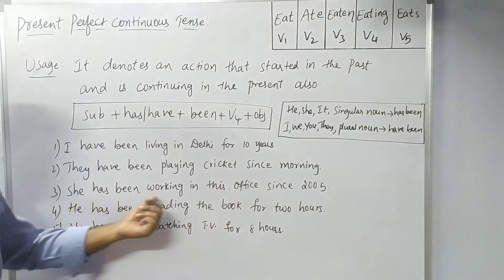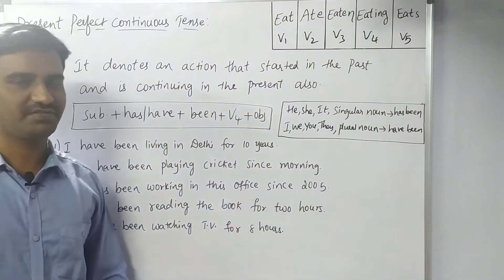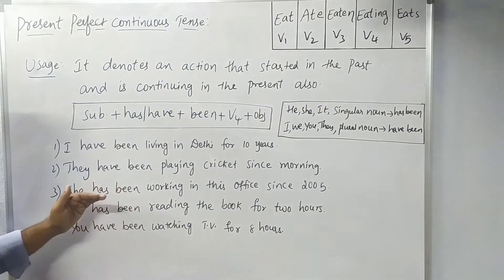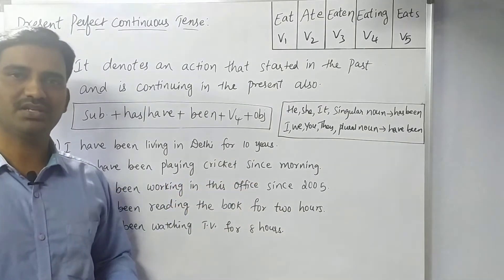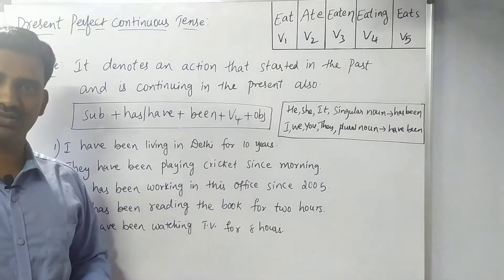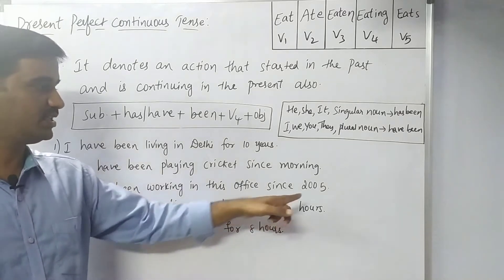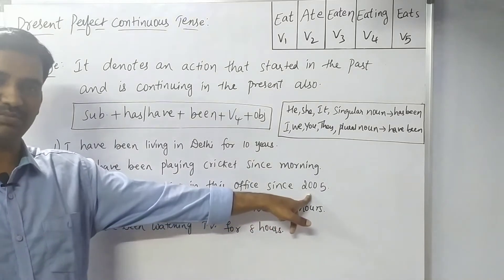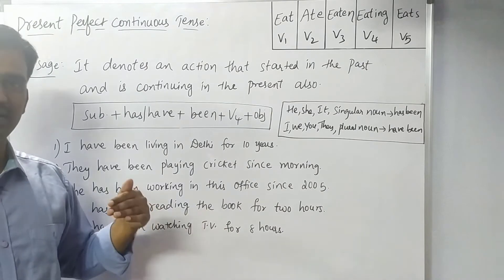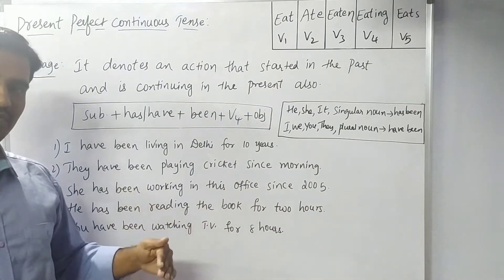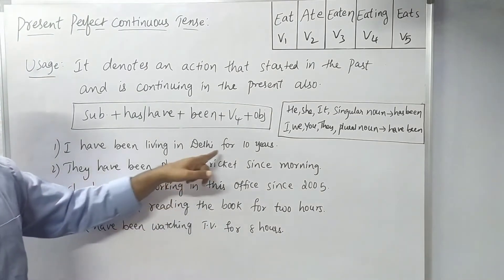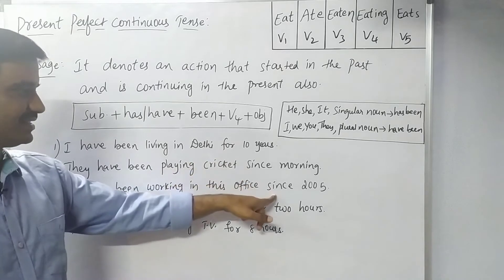Another example: 'She has been working in this office since 2005.' The action started in 2005 and is continuing up to now. So the difference between 'for' and 'since' — in general, we use both with the Present Perfect Continuous.